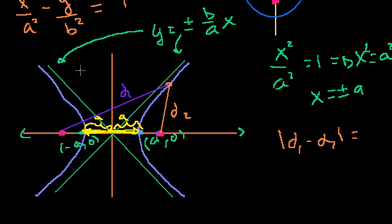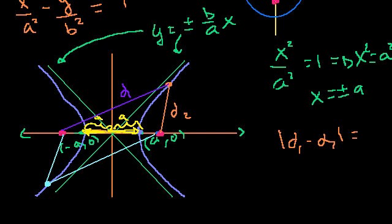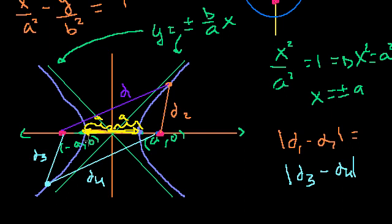In the ellipse situation, d1 plus d2 was a constant. In a hyperbola, you're taking the difference of the distances to the focus points and saying that's a constant. So if I take another point on the hyperbola and call those distances d3 and d4, the difference between d1 and d2 is the same as the difference between d3 and d4 — this is going to be constant the entire way around the hyperbola. So what is this constant going to be equal to?